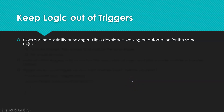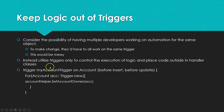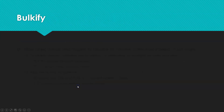The other principle is to keep logic out of triggers. Imagine multiple developers working on automation for the same object — things would get messy quickly. Instead, we use triggers only to control the execution of logic and place the code outside in separate Apex classes. Here's an example: I have 'My Account Trigger' running before insert and before update. For every account in the trigger context, I call a static method in a class called 'Account Helper' with a method called 'set account owner,' passing the account in. Rather than having a bunch of logic in the trigger, I call a method from another class.